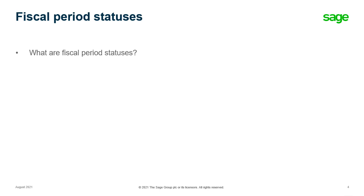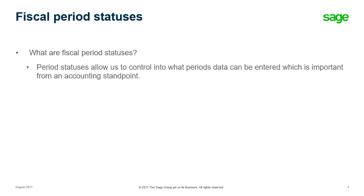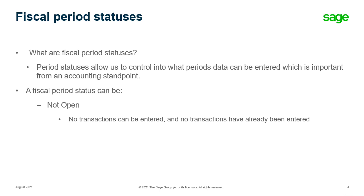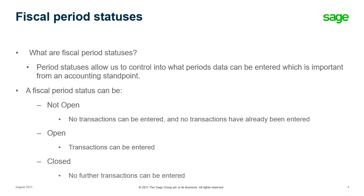So what are fiscal period statuses? Period statuses allow us to control into what periods data can be entered, which is important from an accounting standpoint. A fiscal period status can be: not open — no transactions can be entered and no transactions have already been entered into that period; open — transactions can be entered; or closed — no further transactions can be entered into that period.